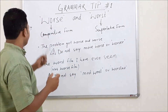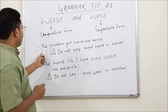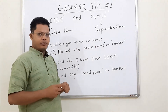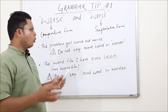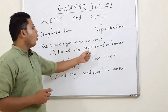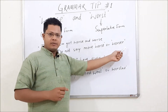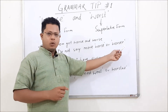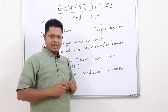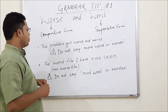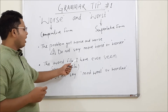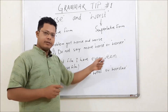Right now, here you need to understand: 'the problem got worse and worse.' Do not say 'more worse.' We do not use 'more' with 'worse.' And whenever you want to say 'the worst film I have ever seen' — use 'worst,' not 'more worse.'